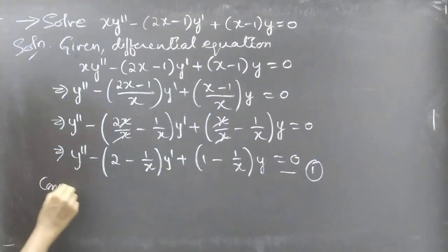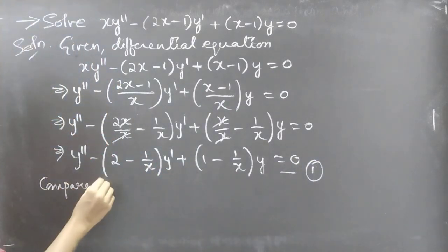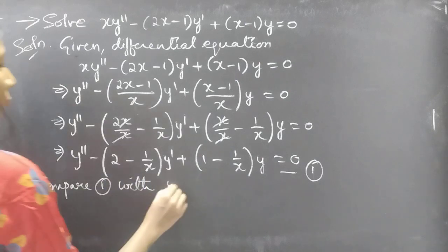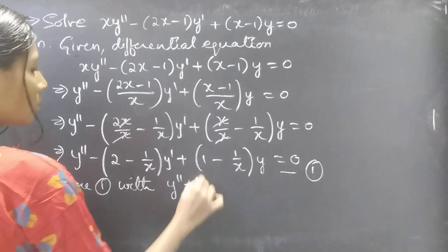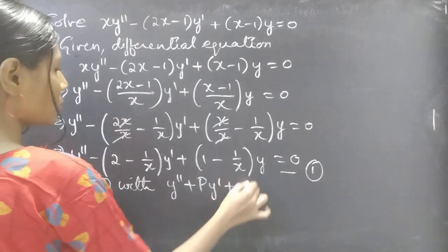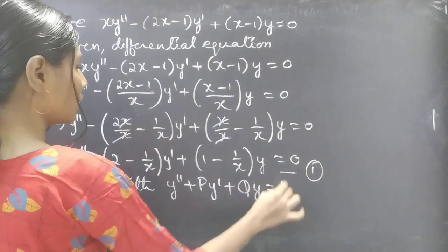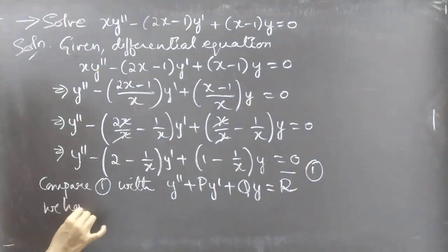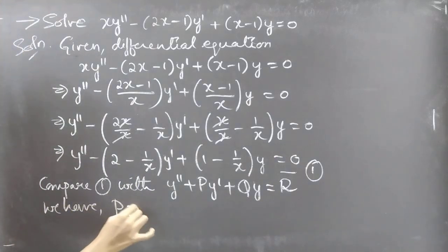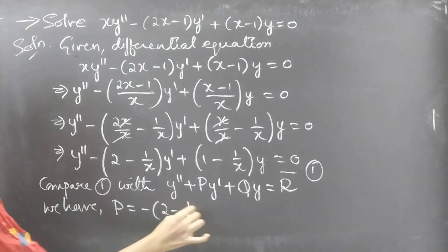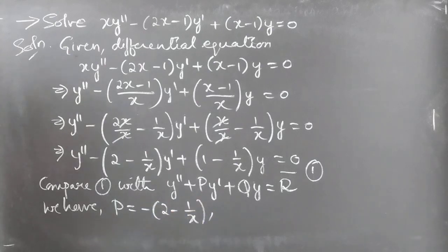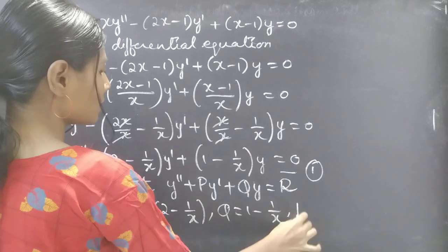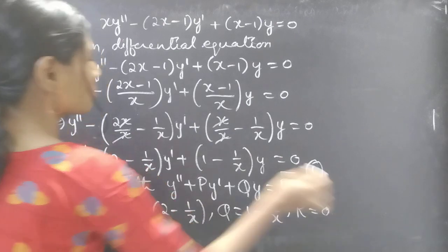Comparing equation 1 with the standard form y'' + P·y' + Q·y = R, we identify: P = −(2 − 1/x), Q = (1 − 1/x), and R = 0.